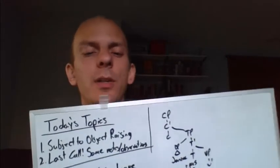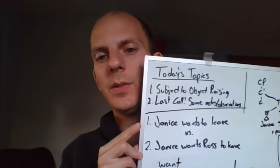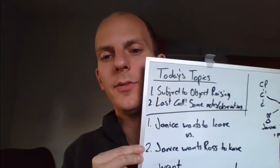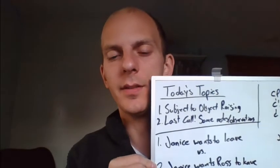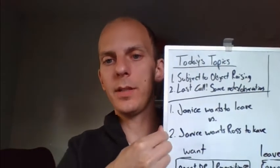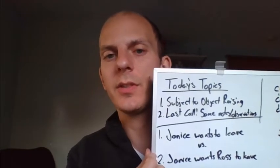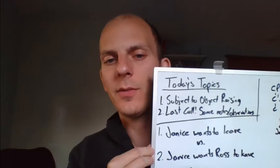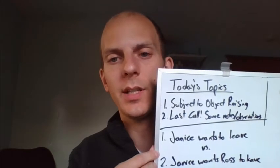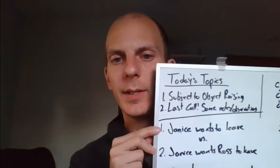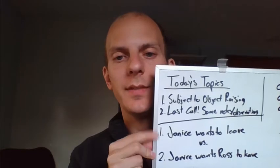We're going to look at a very interesting dichotomy in sentences right now in the first half of today's class - between something like 'Janice wants to leave' and 'Janice wants Ross to leave.' They look very similar on the surface; it's just one word different. But this one word is actually going to shift our structure considerably, changing it from a subject control sentence to a raising sentence - a subject-to-object raising type.